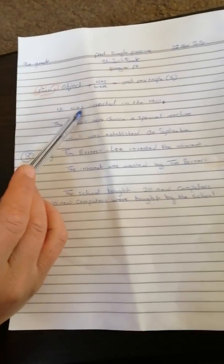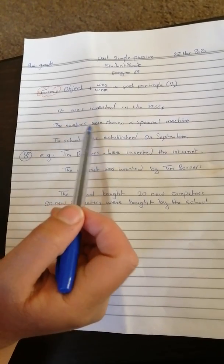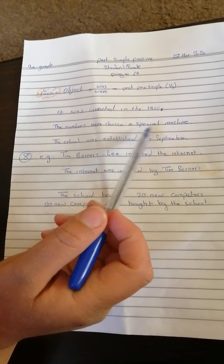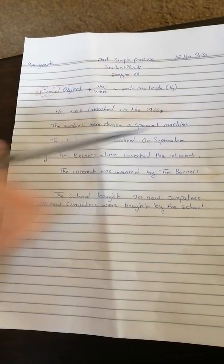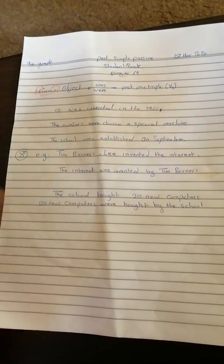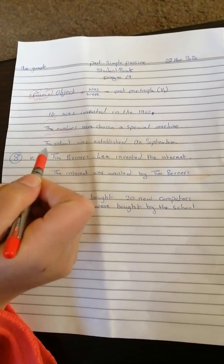It was invented in the 1960s. The numbers were chosen in a special machine. The school was established in September. These are examples. Look here, this is the object.